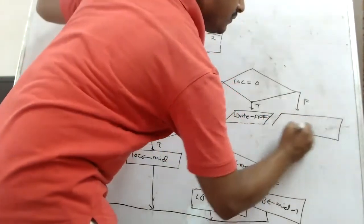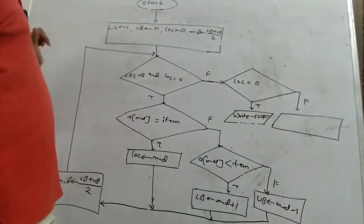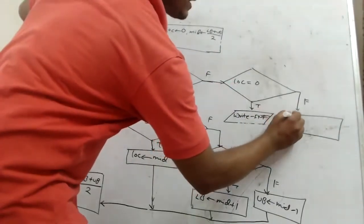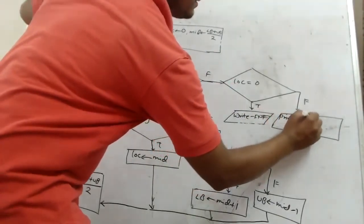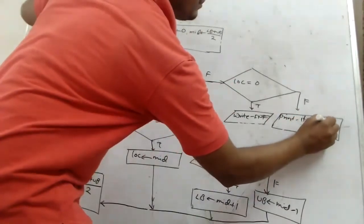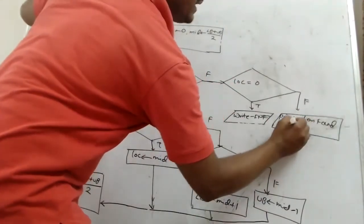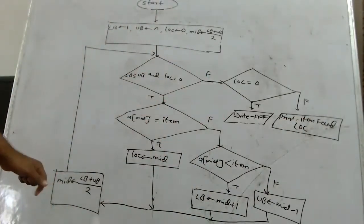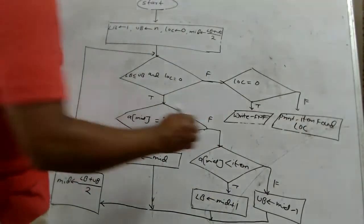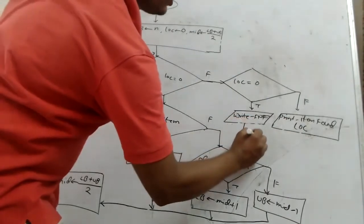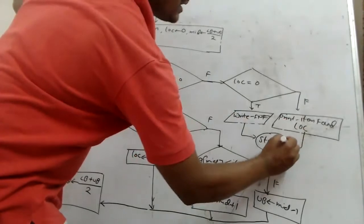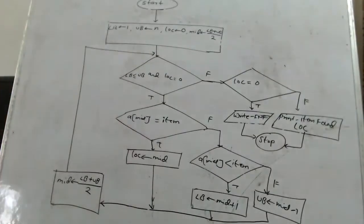और जब यह condition false होगी — it means LOC 0 नहीं है — तो print या write: item found at location LOC, और LOC की value भी display करेंगे। दोनों ही cases में next control stop या exit की तरफ जाएगा। तो यह है इसका flowchart।